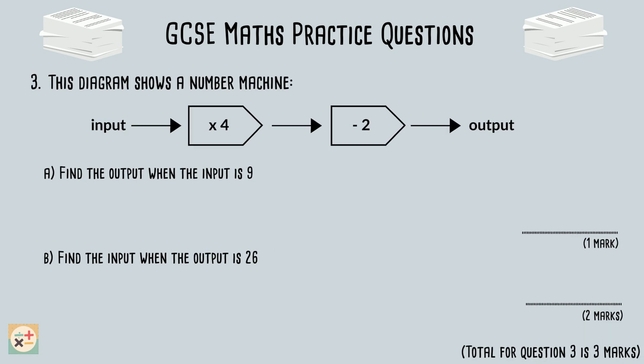For question 3, we are given a diagram of a number machine, where there is an input, some operations, and then an output. Part A of the question asks us to find the output when the input is equal to 9. For this, all we need to do is perform the operations given on the number 9.